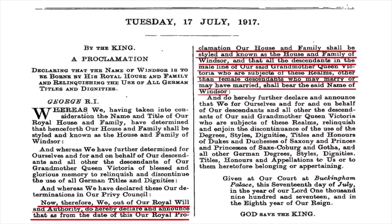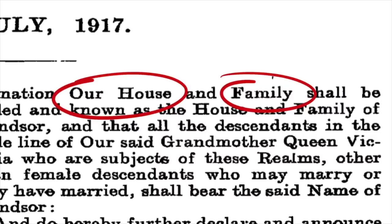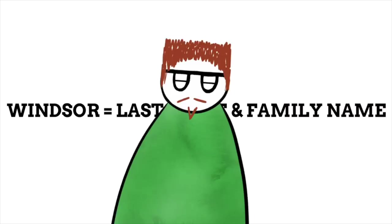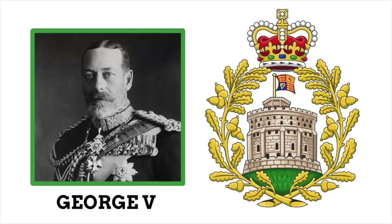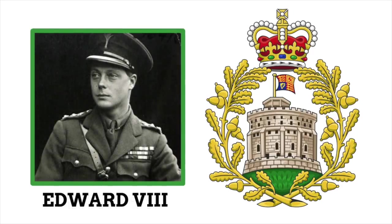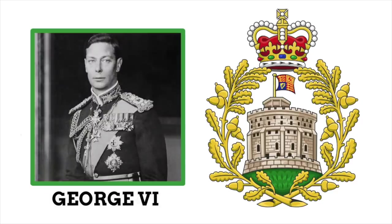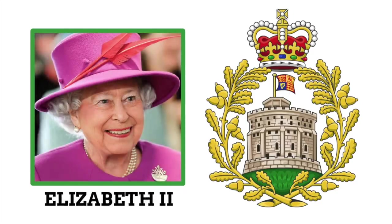On the 17th of July 1917, a royal proclamation was issued by George V declaring that his household and family shall be styled and known as the House and Family of Windsor, and that all male-line descendants of Queen Victoria who are subjects of these realms shall bear the name Windsor. Notably, George V declared not only that the house is now called Windsor, but that the family name is Windsor too — meaning Windsor could be used as a last name for future royal family members. By the time George V died in 1936, Windsor was secured as the name of the royal family and house.